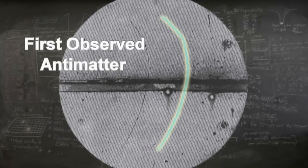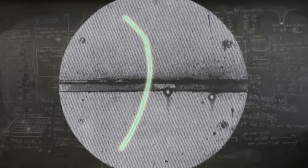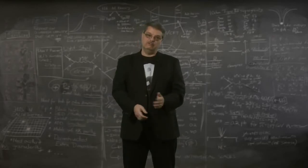Antimatter was predicted in the 1920s and discovered shortly thereafter. Since its discovery, scientists have been able to make anti-atoms, including antimatter hydrogen and helium. Antimatter is science fact, not fiction.